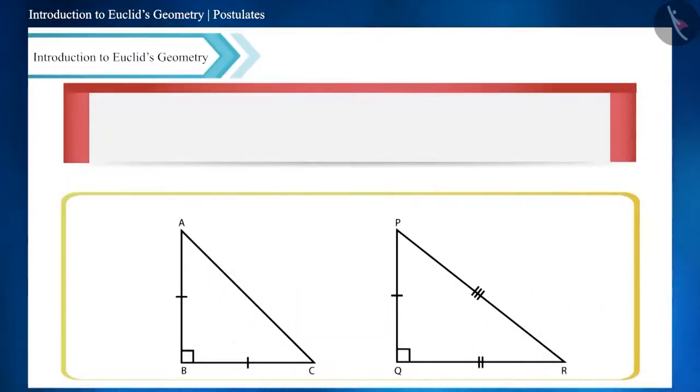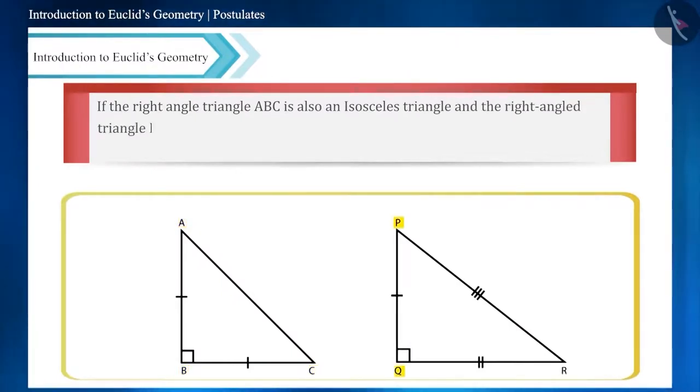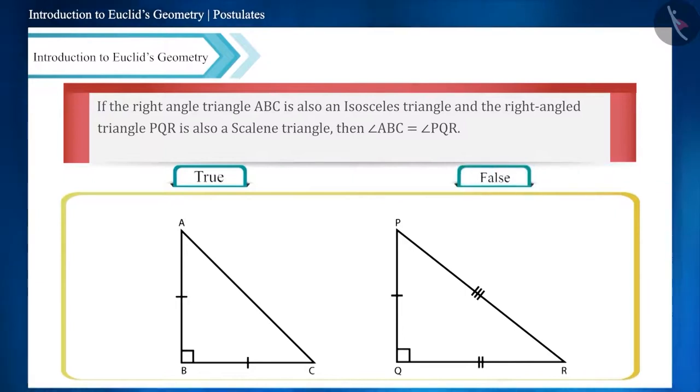If the right angle triangle ABC is also an isosceles triangle and the right angle triangle PQR is also a scalene triangle, then angle ABC will be equal to angle PQR. Is the given statement true or false? Friends, look at this question carefully.